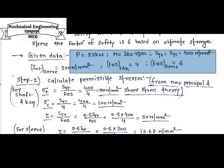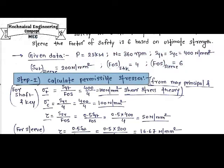The first step is to calculate the permissible stresses for shaft, key, and sleeve material. The shaft and key are the same material — plain carbon steel 30C8 — having Syt and Syc equal to 400 N/mm². From Rankine's failure theory, sigma_t is equal to Syt divided by FOS.